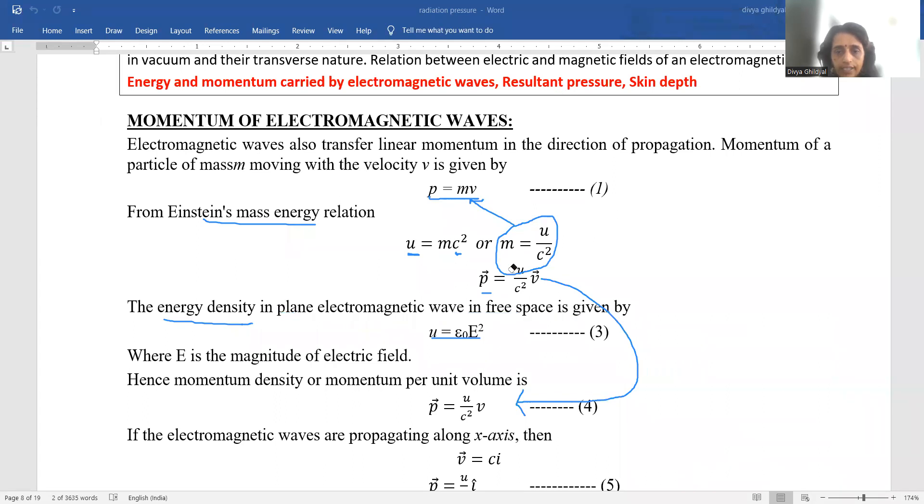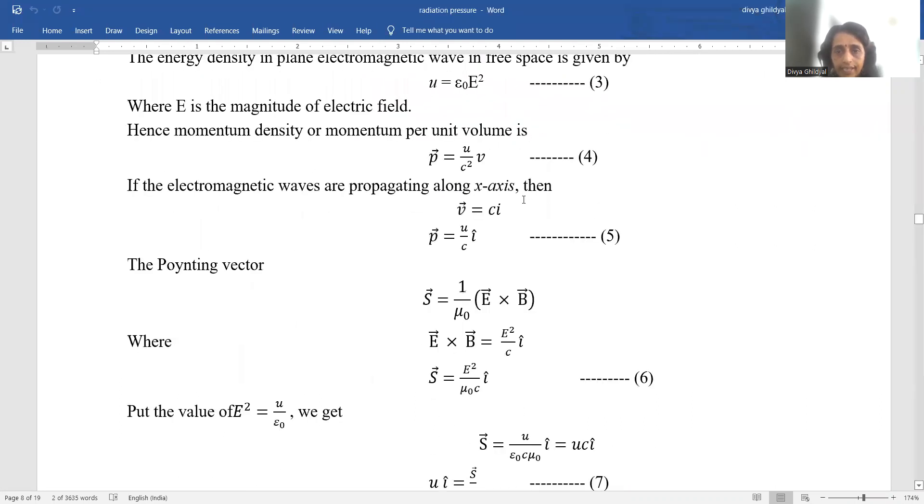Now, if this electromagnetic wave, though it propagates in x, y, and z, all three directions, suppose it is traveling along the x axis, then we will take the x axis component that is v is equal to ci.